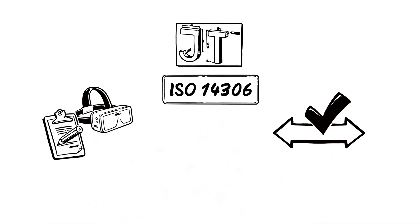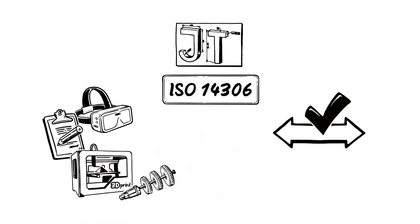JT is an ISO standard, which means it's excellent for exchanging data. Subsequent disciplines such as visualization, purchasing, manufacturing, and many others can also use the JT data.